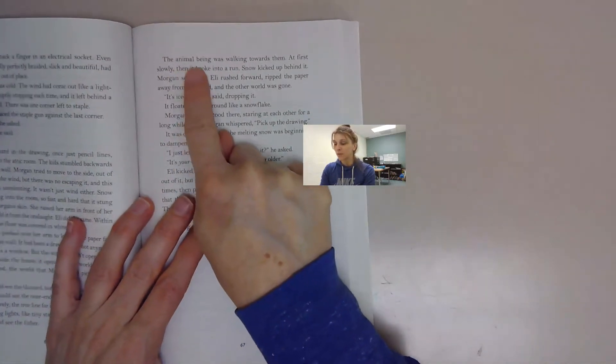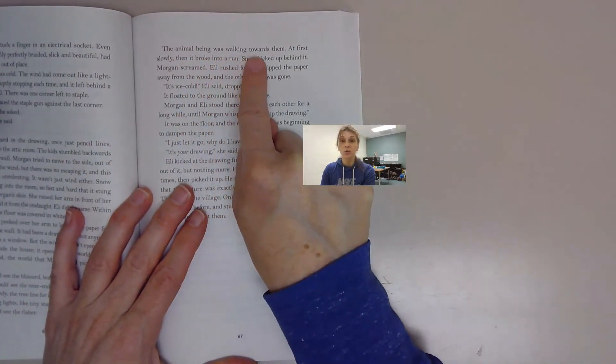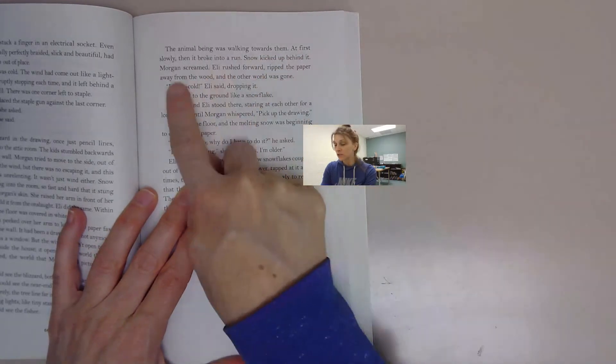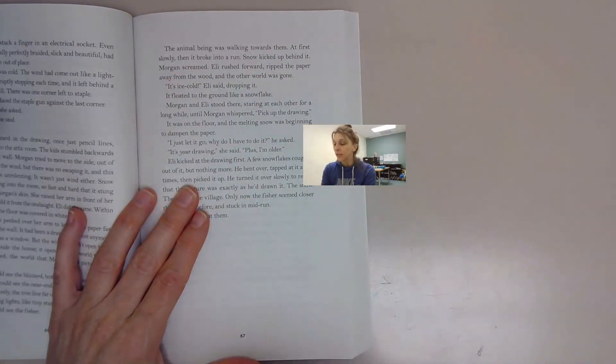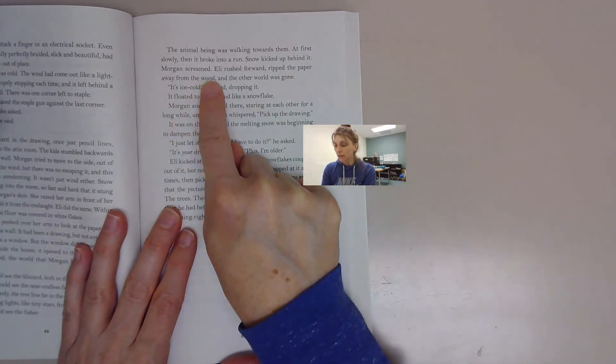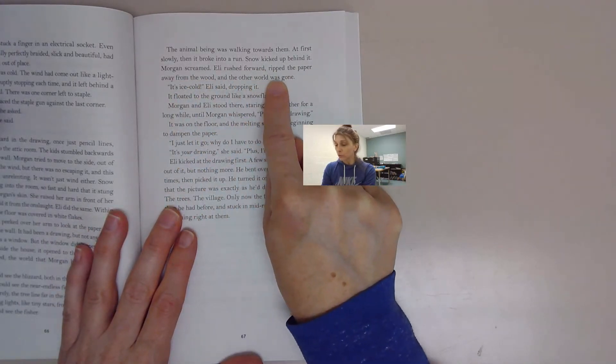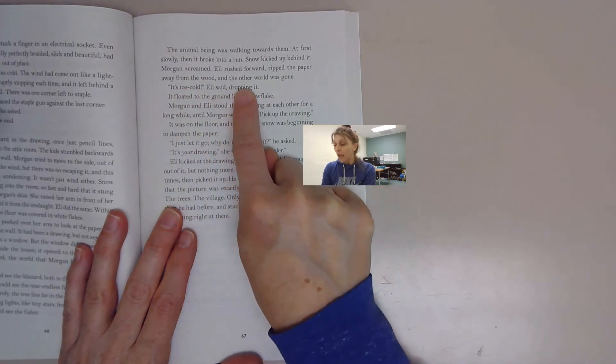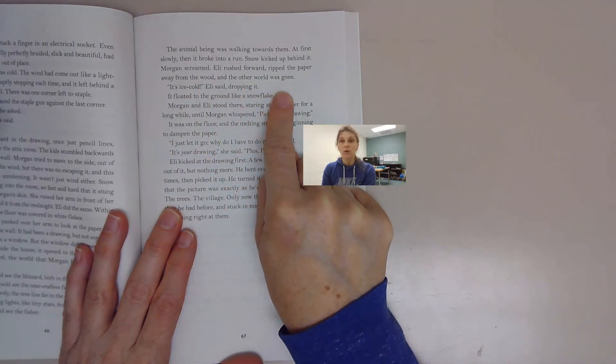The animal being was walking towards them. At first slowly, then it broke into a run. Snow kicked up behind it. Morgan screamed. Eli rushed forward, ripped the paper away from the wood, and the other world was gone.